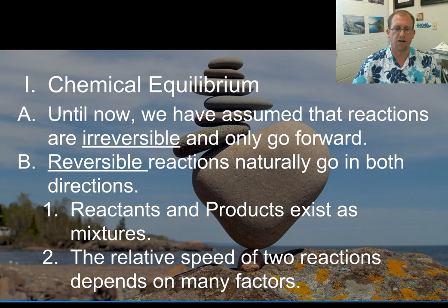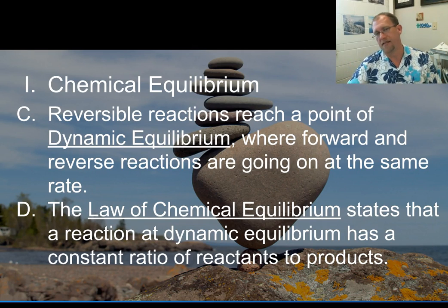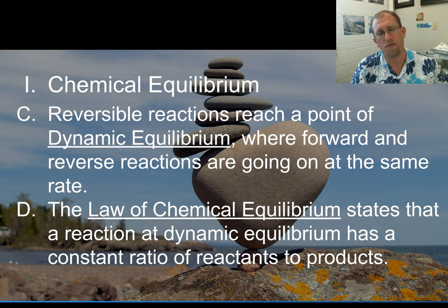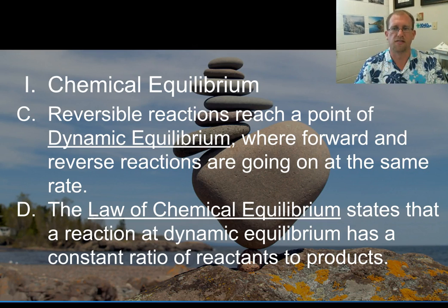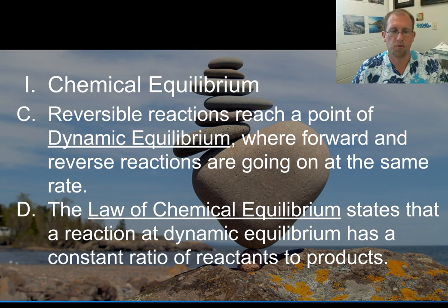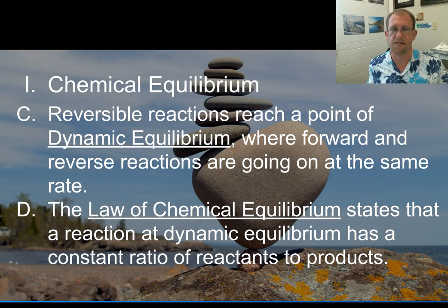The relative speed of those two reactions depends on lots of factors that we will unpack here. There comes a point where the reactants are producing products at the same rate that products are producing reactants, and so we reach a point of dynamic equilibrium. That word means where it's not stopped, but it looks like it is, because it's going both directions at the same speed. The law of chemical equilibrium states that a reaction at dynamic equilibrium has a constant ratio of reactants and products. While reactions are still happening, the solution doesn't look like there's more reactions happening, because it's being made and unmade at the same rate.